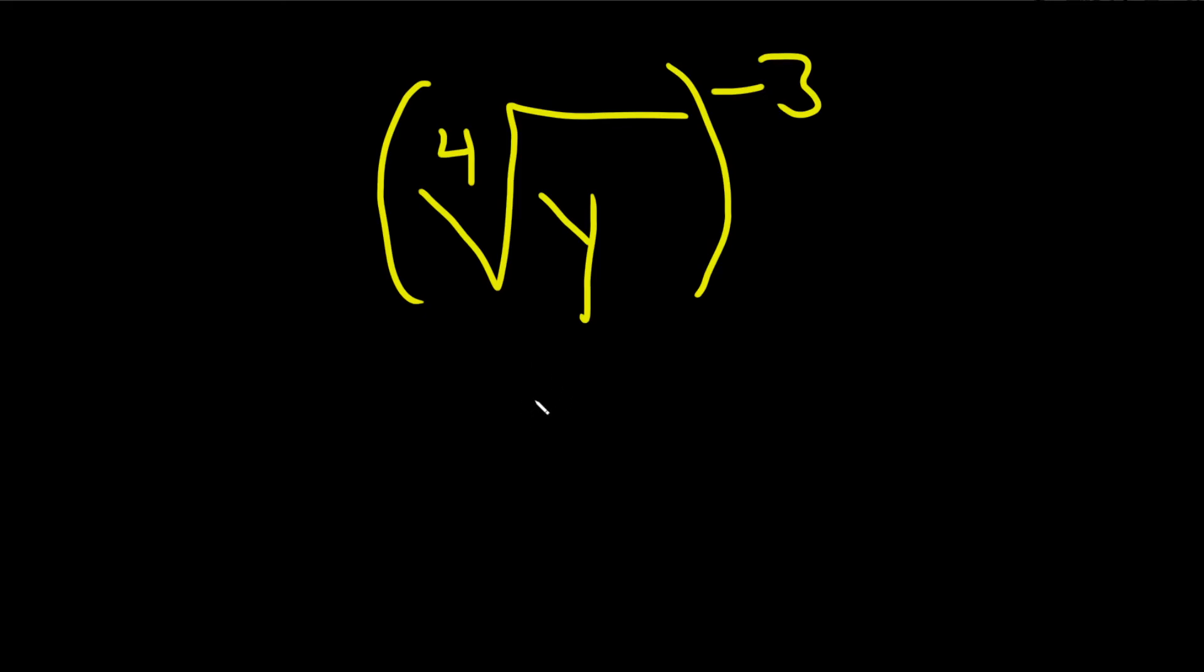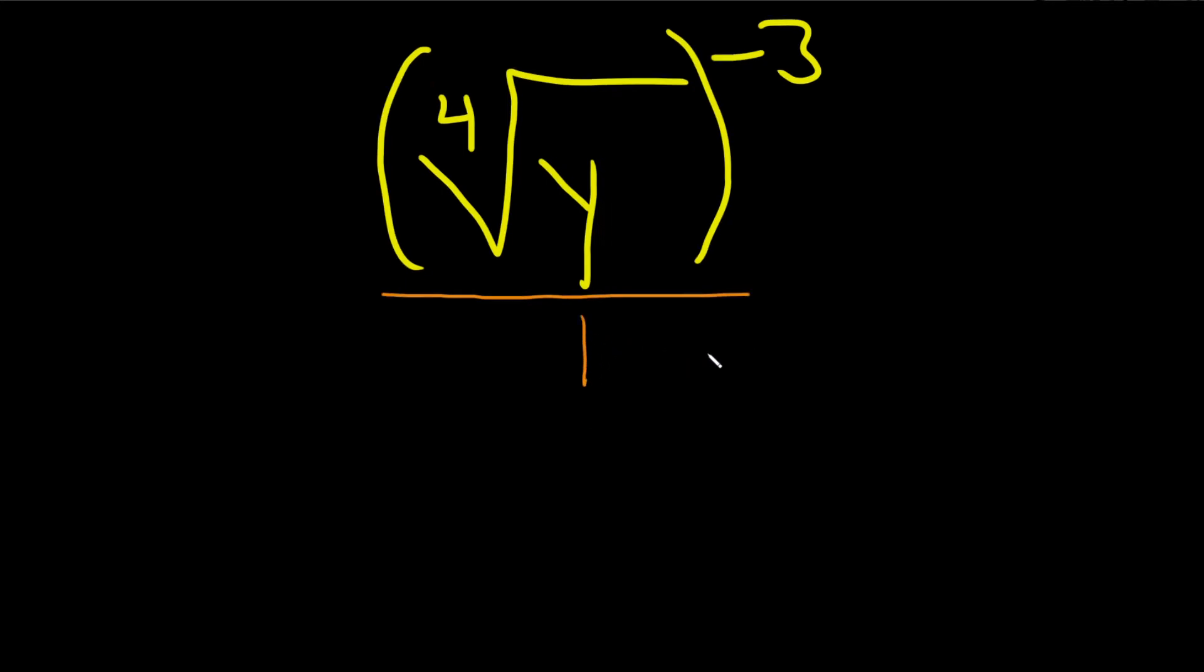In this problem we have this expression and we have to write it using rational exponents. So let's start by getting rid of this negative. Realize that this is really all being divided by 1, and so what we can do is bring this whole thing downstairs to make this exponent positive.